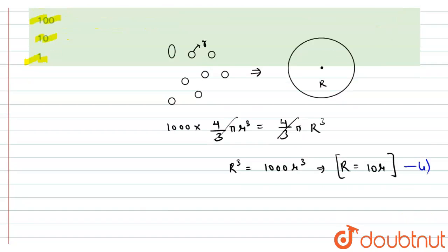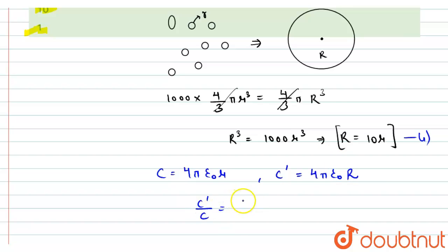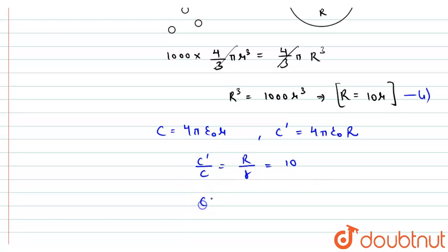For a spherical conductor, the capacitance is given as C = 4πε₀r. Let this be the capacitance for the smaller drops, and C' = 4πε₀R be the capacitance for the bigger drop. Taking the ratio C'/C, we get R/r = 10. So the capacitance of the bigger drop equals 10 times the capacitance of the smaller drops. Let this be equation number two.